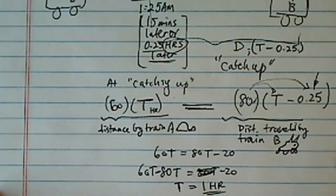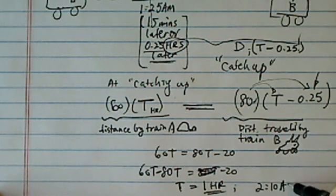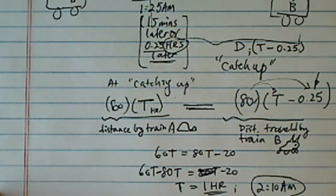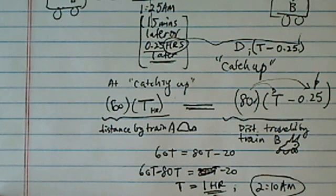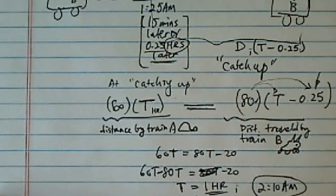60T minus 80T is equal to minus 20. So T is actually equal to one hour. So basically, when it's caught up at the time, it should be 2:10 a.m. when both trains are exactly at the same time. Because T, remember, is the hour traveled by the slower train.